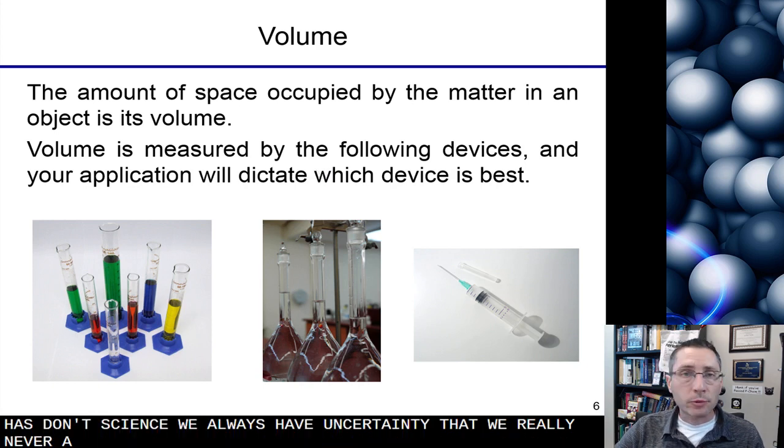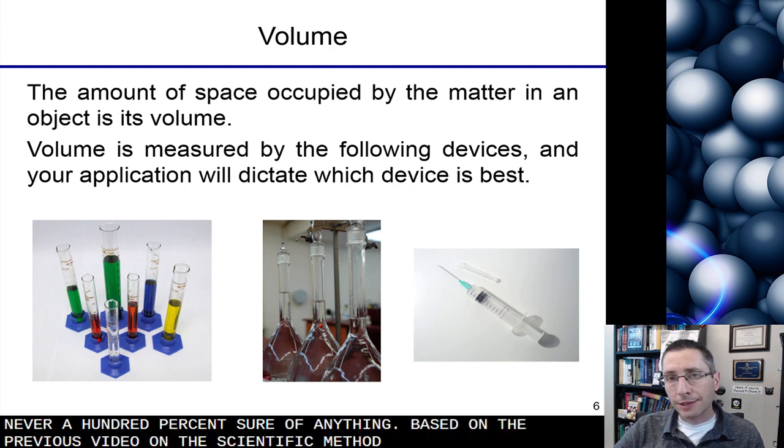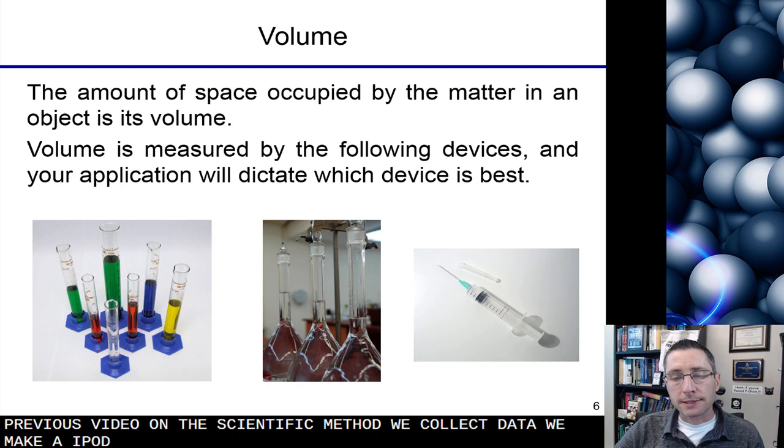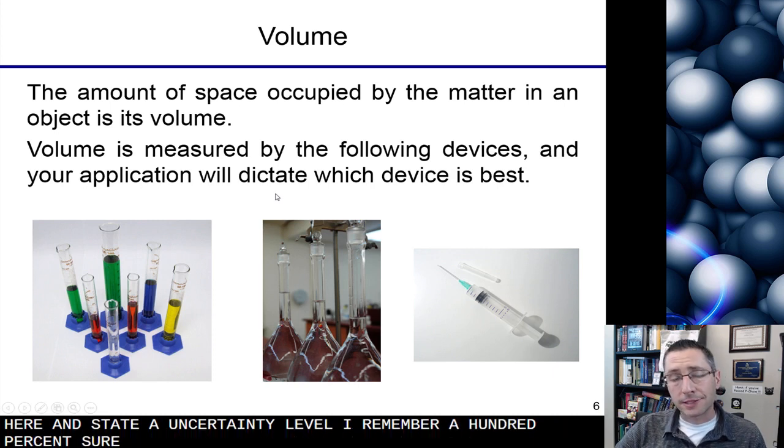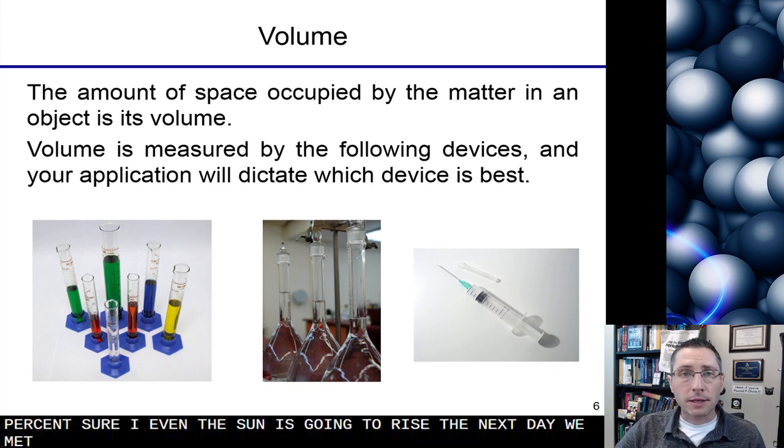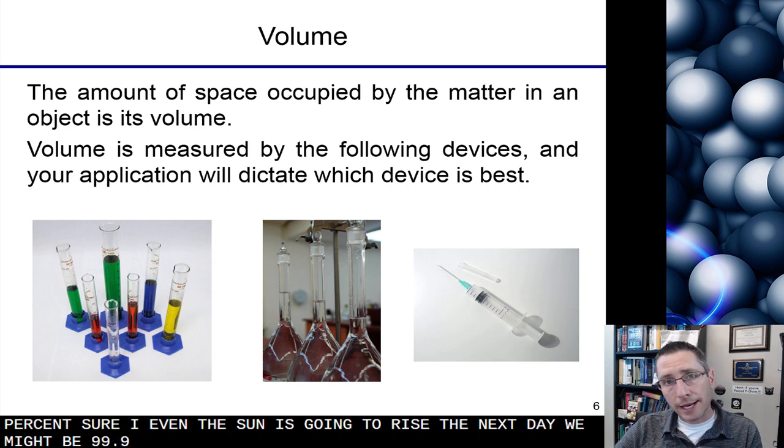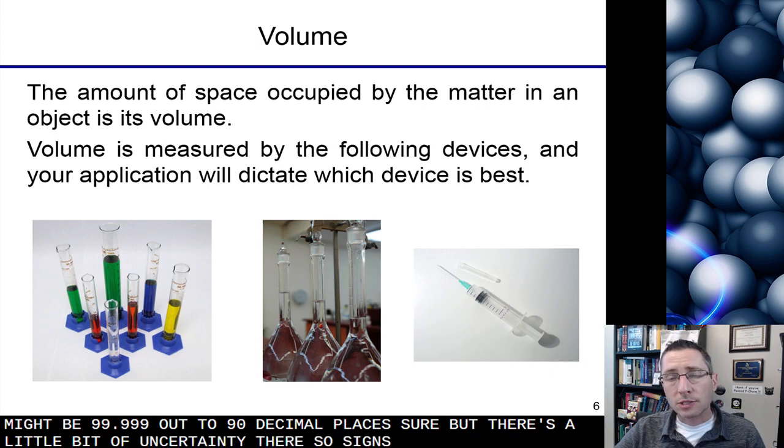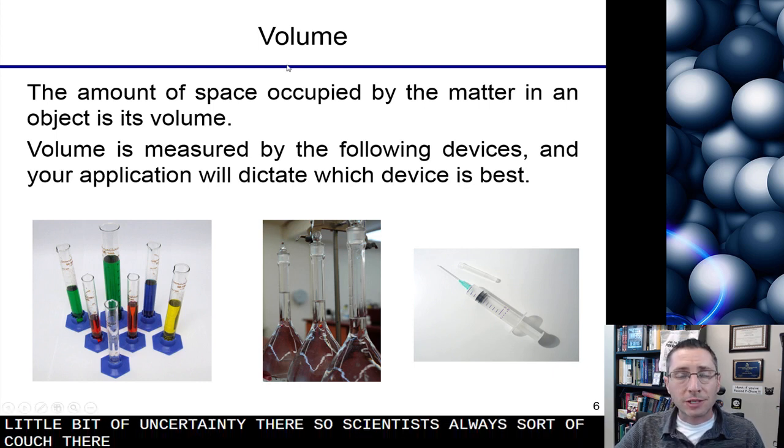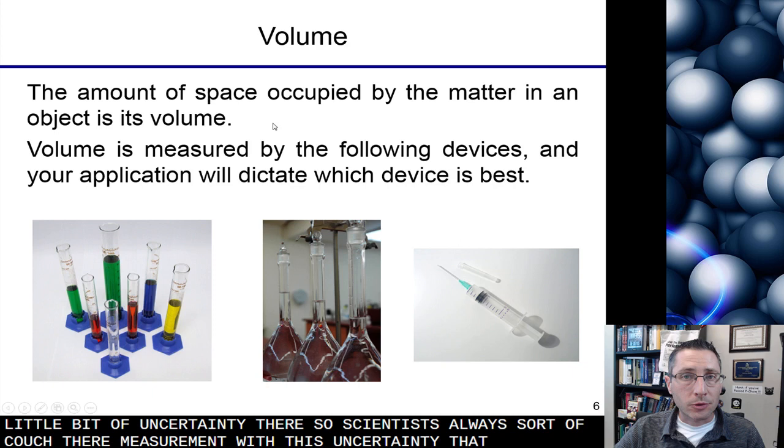We're really never a hundred percent sure of anything. Based on the previous video in the scientific method, we collect data, we make a hypothesis, and in the same manner we might collect data here and state an uncertainty level. We're never a hundred percent sure even the sun is going to rise the next day. We might be 99.999 out to 90 decimal places sure, but there's a little bit of uncertainty there. So scientists always sort of couch their measurement with this uncertainty. That's how we do it in science.